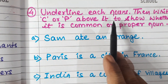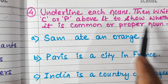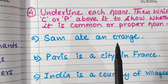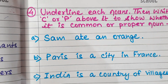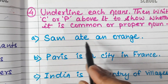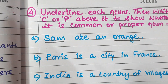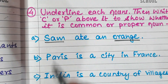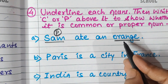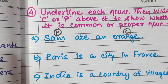Now, underline each noun, then write C or P above it to show whether it is a common or proper noun. Write C for common noun and P for proper noun. For example: Sam ate an orange. Sam and orange are both nouns. Sam is a boy's name — a single person's name — so it's a proper noun, P. Orange refers to all oranges in general, so this is a common noun, C.